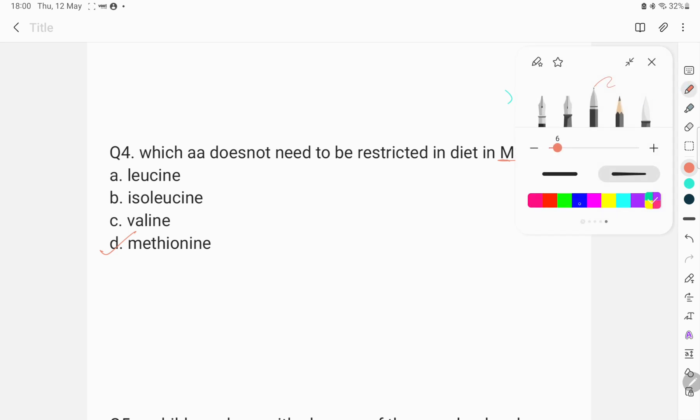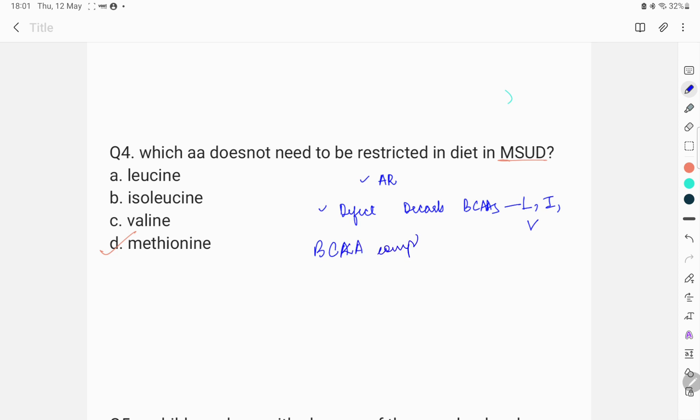A few points about maple syrup urine disease. Like any other inborn error of metabolism, maple syrup urine disease also has an autosomal recessive inheritance. It is caused by a defect in decarboxylation of branched chain amino acids that are leucine, isoleucine and valine. What enzyme is defective? There is low activity of branched chain alpha keto acid dehydrogenase enzyme complex. The child will present as a typical picture of an inborn error of metabolism. There would be poor feeding, dehydration, acidosis and encephalopathy or CNS depression.